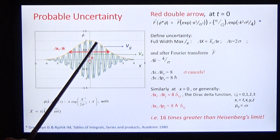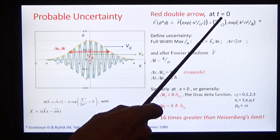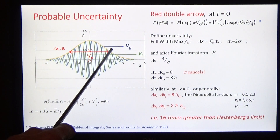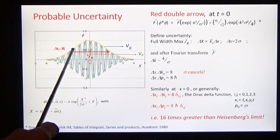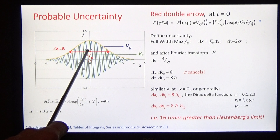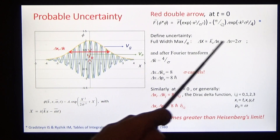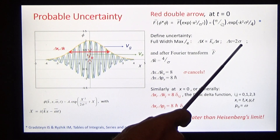What is the uncertainty in position if we put t equals zero? The uncertainty in position is something like the full width half maximum — we define it as the full width one-over-e of maximum. The uncertainty dx is then two sigma.